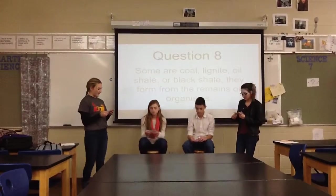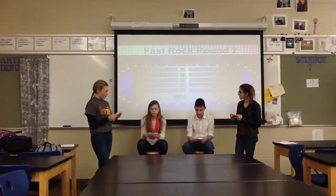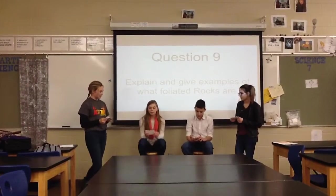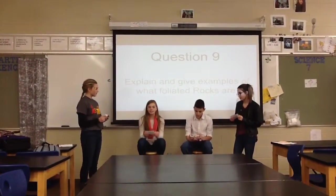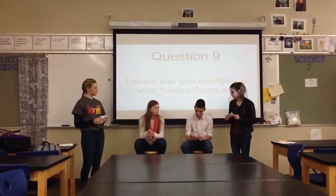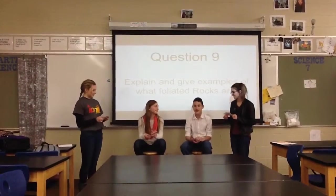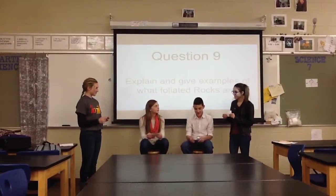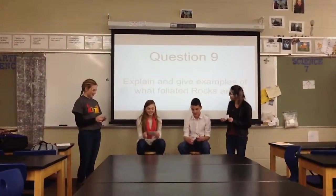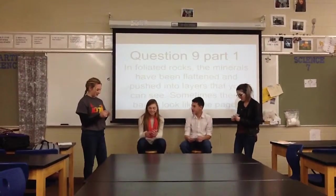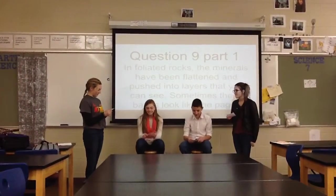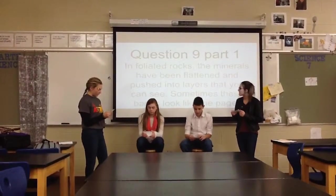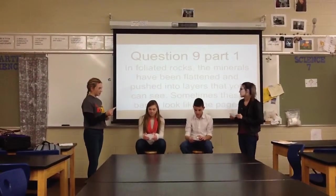Question 9: Explain and give some examples of what foliated rocks are. Contestant 1 answered: Minerals that have been pushed down — they look like pages of books. Examples are slate, schist, and gneiss. Contestant 2 said they didn't know. Contestant 1 is right. In foliated rocks, the minerals have been flattened and pushed into layers that you can see. Sometimes these bands look like the pages of a book. Three common foliated rocks are slate, schist, and gneiss.